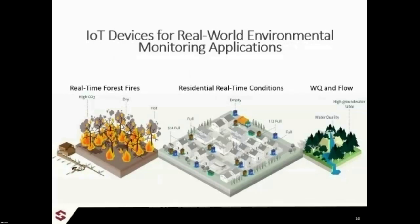We can look at real-time residential conditions — everything from your sump pump in your house to recycling bins and garbage bins. We can monitor absolutely everything. I can look at your gas meter in your house, put all this data out to the cloud. From a water quality and flow perspective, we can do everything from in-situ water quality to flow, flood forecasting, all the way through real-time precipitation monitoring.